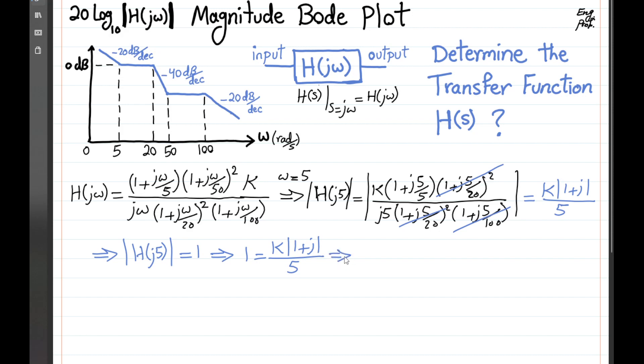which means k times square root of 2 divided by 5 is equal to 1, and that means k should be 5 divided by square root of 2. So that's the constant in the transfer function of the system.